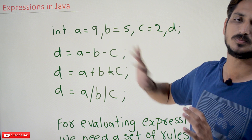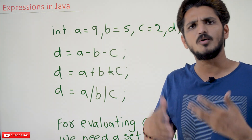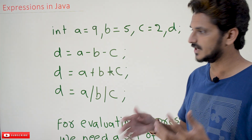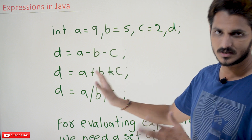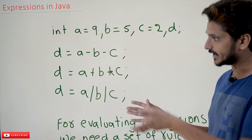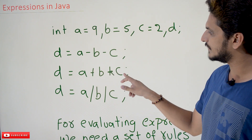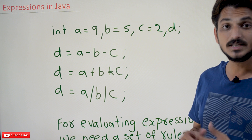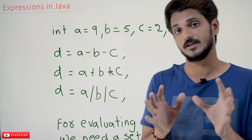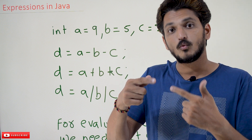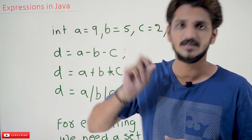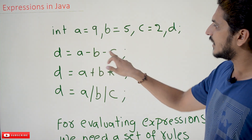This operation has to be done, and the value obtained after evaluating this expression will be assigned to variable d. We can use any of the operators we discussed in our previous classes. For simplicity, we have taken arithmetic operators like multiplication and division operators. Let's take one more expression: d = a + b * c, and d = a / b / c. These expressions have to be evaluated, and one important point you need to understand is how they are going to be evaluated.